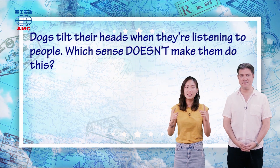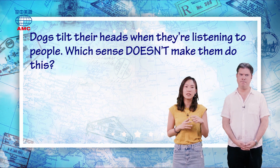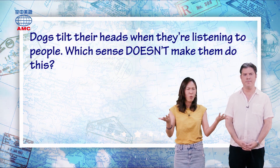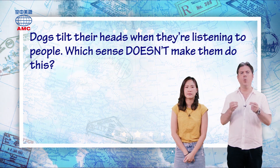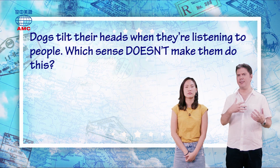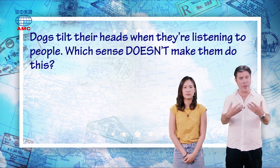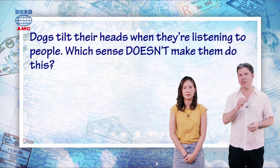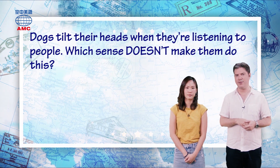Our article says: when dogs are listening to people, they tilt their heads. 当狗狗听人类说话的时候，他们会歪头。 Why? Here's the other big question: which sense doesn't make them do this? It's a complicated question. Dogs do this — we know that, we accept that. But which sense does not make them do this?